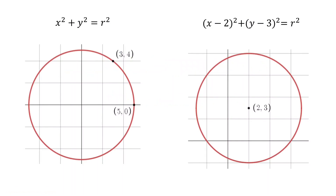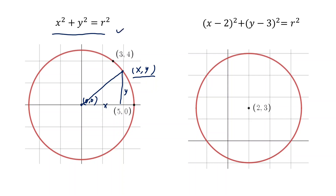Let's consider a circle. In this x,y coordinate, we have the origin at the center of the circle, and we draw a circle with radius 5. If we pick any random point x,y from the circle, we know by the Pythagorean theorem we're going to have x squared plus y squared equal to r squared. Because this is a random point on the circle, this is basically the equation of a circle: x squared plus y squared equals r squared.